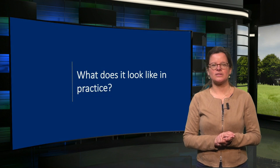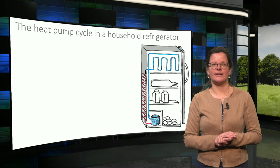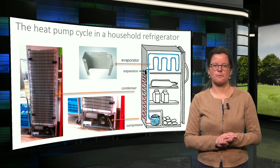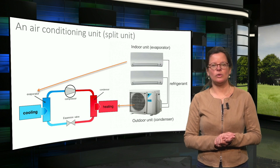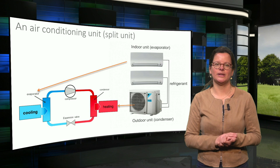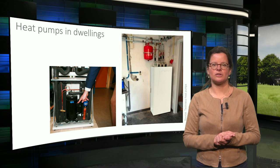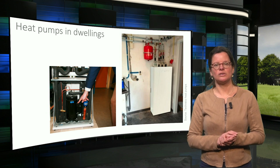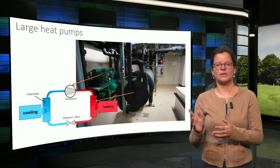Now I will show you some examples of what heat pumps look like in practice. The heat pump we all know is the refrigerator. In this figure you can see where in this device the evaporator, compressor, condenser, and expansion valve can be found. Also in an air conditioner split unit these components can be identified, although the most visible parts are the condenser and the evaporator. This figure shows a household heat pump which has a larger compressor than a refrigerator since more power is needed. For larger multifamily or non-residential buildings, large heat pumps can be built — these can even have multiple compressors.